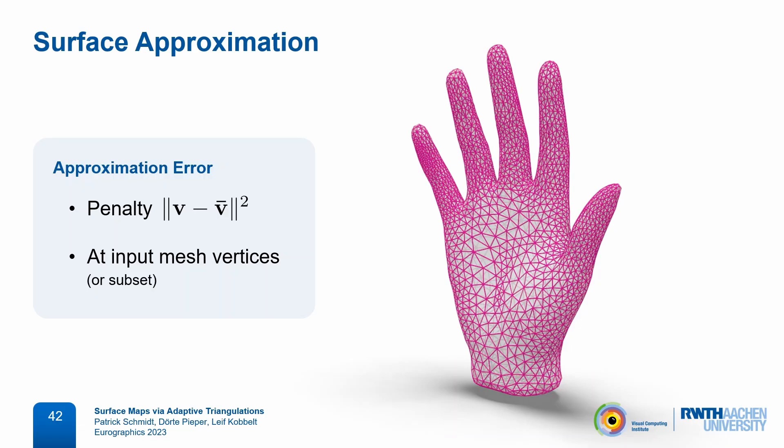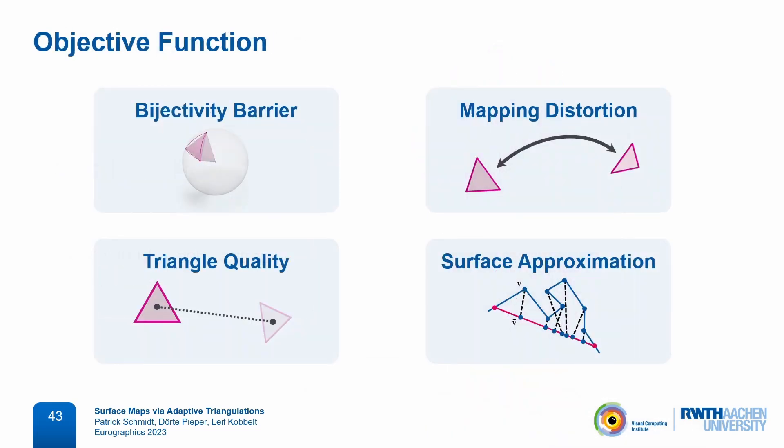Our final objective function is a weighted sum of these terms. In the paper we show that a reasonable set of default weights works well in different scenarios. This formulation is quite flexible — besides the bijectivity barrier, which is the only mandatory term, everything else can be freely replaced by alternatives or we could add new terms to the mix.